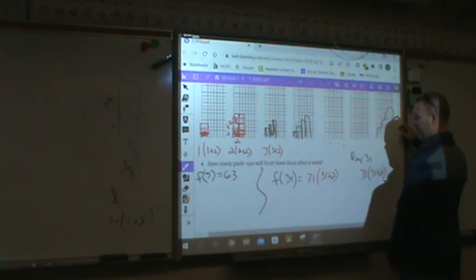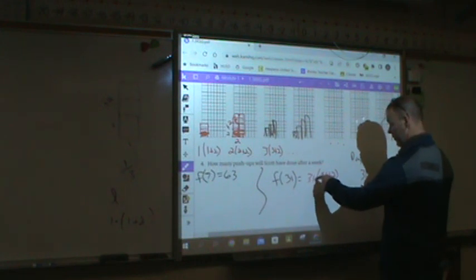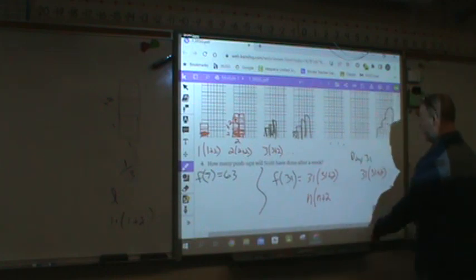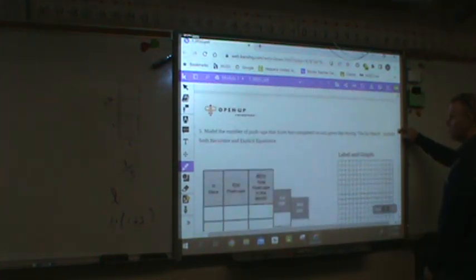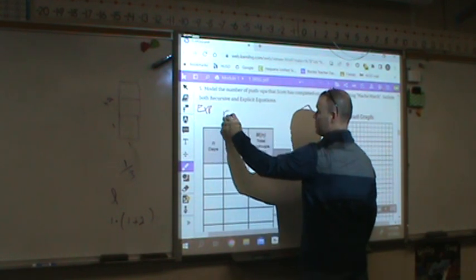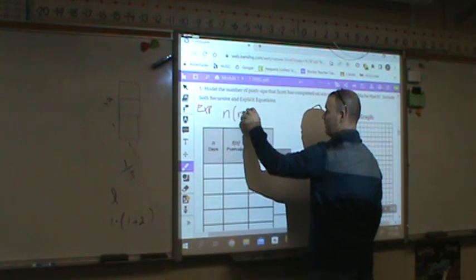That's how that would work. This is my specific formula. So instead of 31, I can replace that with n times n plus two. n is the number of days. So let's write that over here. This would be my explicit equation, n times n plus two.